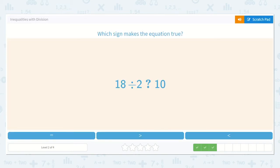Next we have 18 divided by 2. And then we have 10. Alright, so let's count by 2 until we get to 18. 2, 4, 6, 8, 10, 12, 14, 16, 18. That was 9.